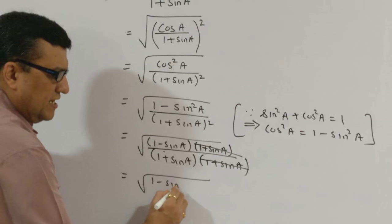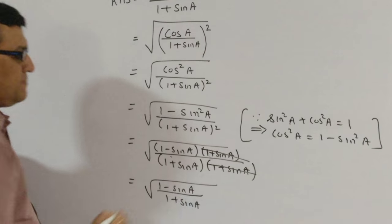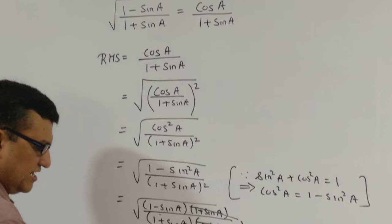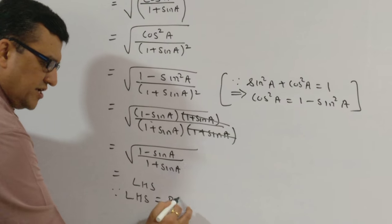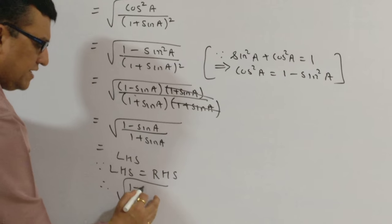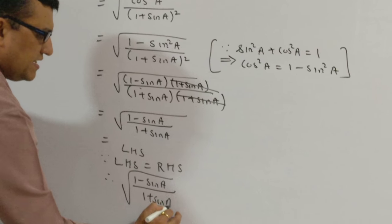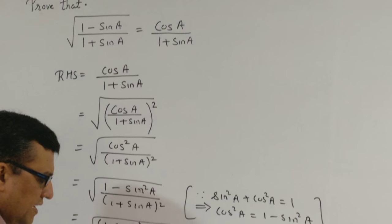Now if you have a look at my LHS, that's what I wanted. So this is equals to my LHS. Since LHS is equals to RHS, one can say the entire question, square root of 1 minus sine A upon 1 plus sine A, is equal to cos A upon 1 plus sine A, is proved.